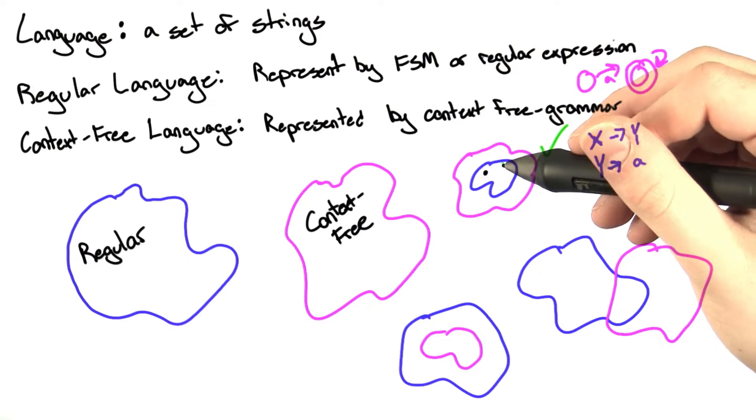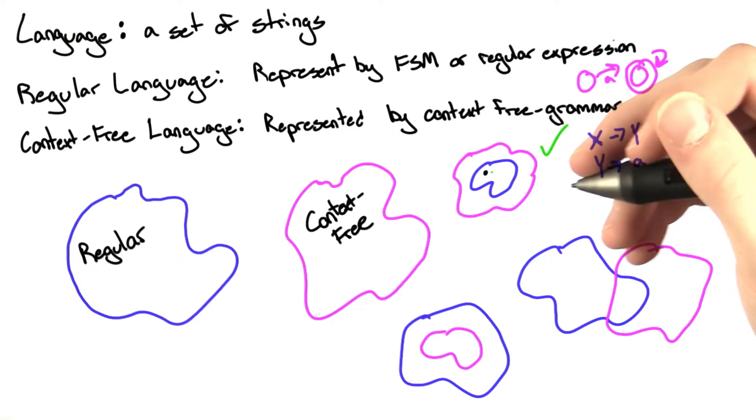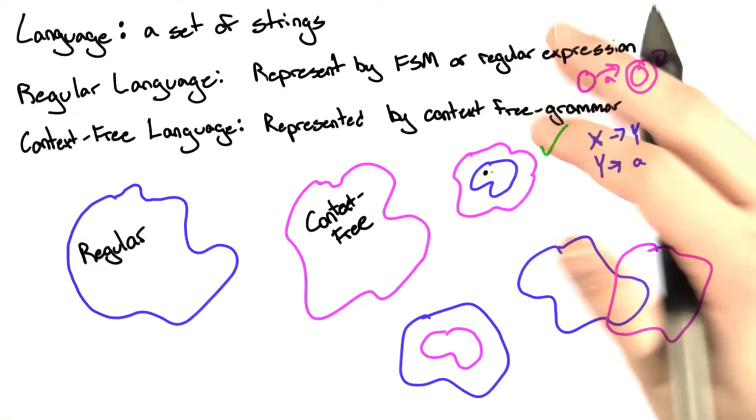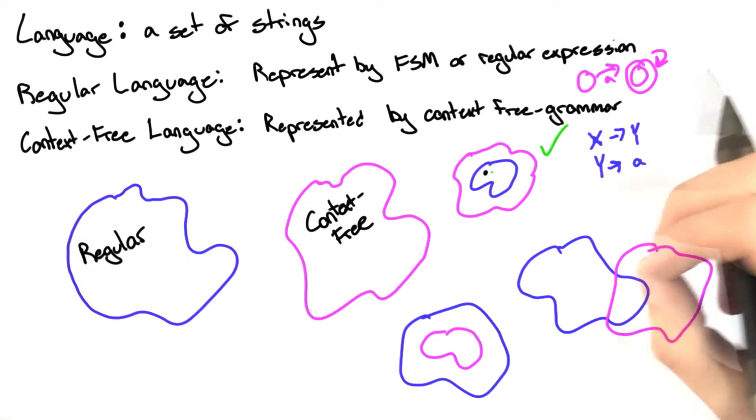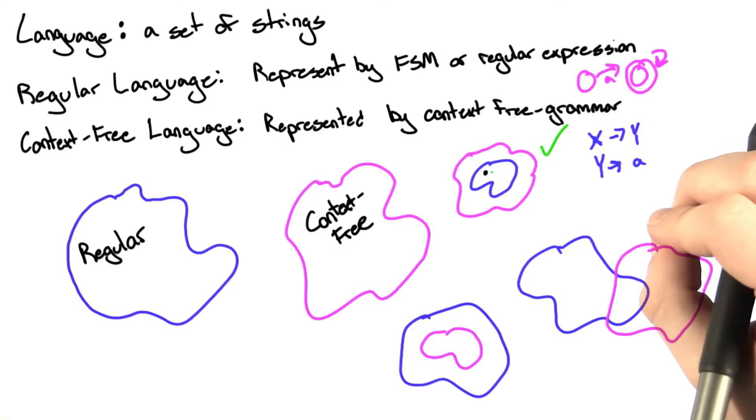Briefly in lecture, Wes outlined the proof that all regular languages are context-free. The way the proof works is that you show that given an arbitrary finite state machine, you can create a context-free grammar that embodies it, that represents the same functionality. Namely, it generates the same exact set of strings.